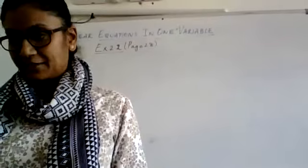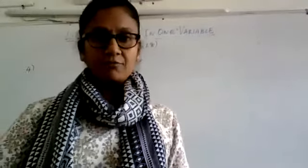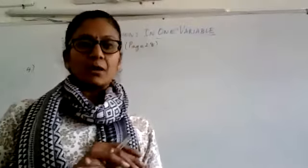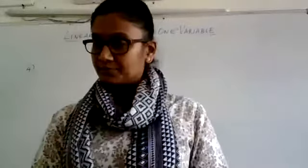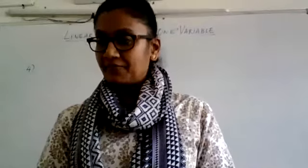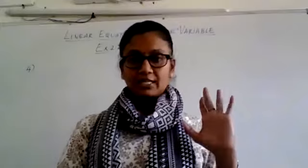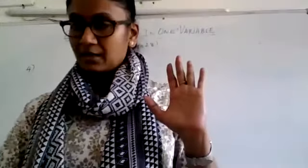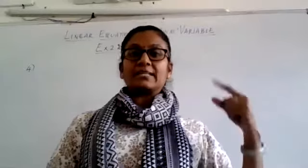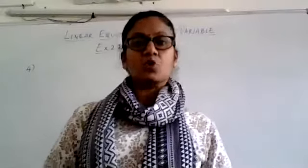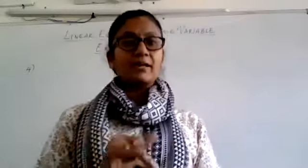The sum of two numbers is 95. If one exceeds the other by 15, find the numbers. So there are two numbers — not known to us. Only the sum is given as 95. When I add both those numbers I am going to get 95. The second condition given is that one number exceeds the other — exceed means more than — so one number is more than the other by 15.